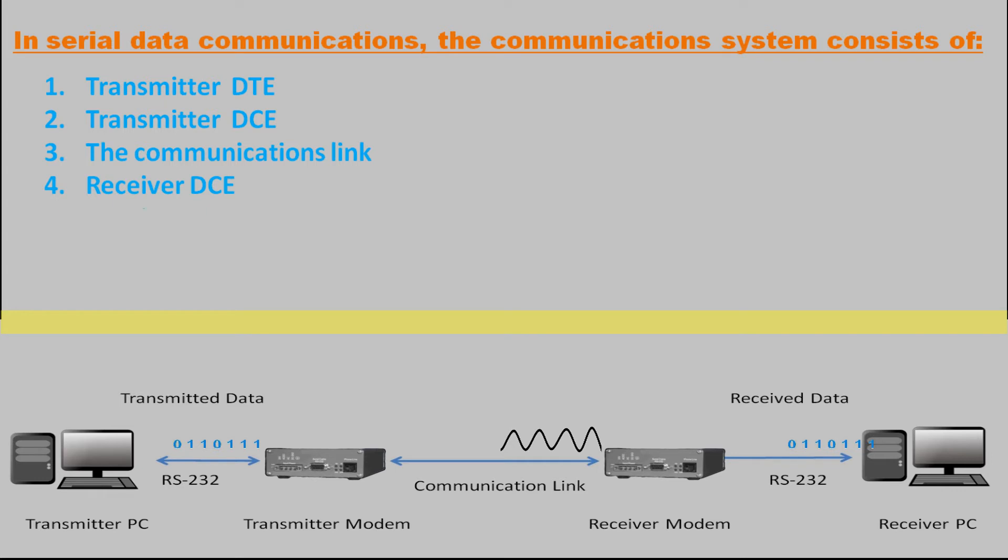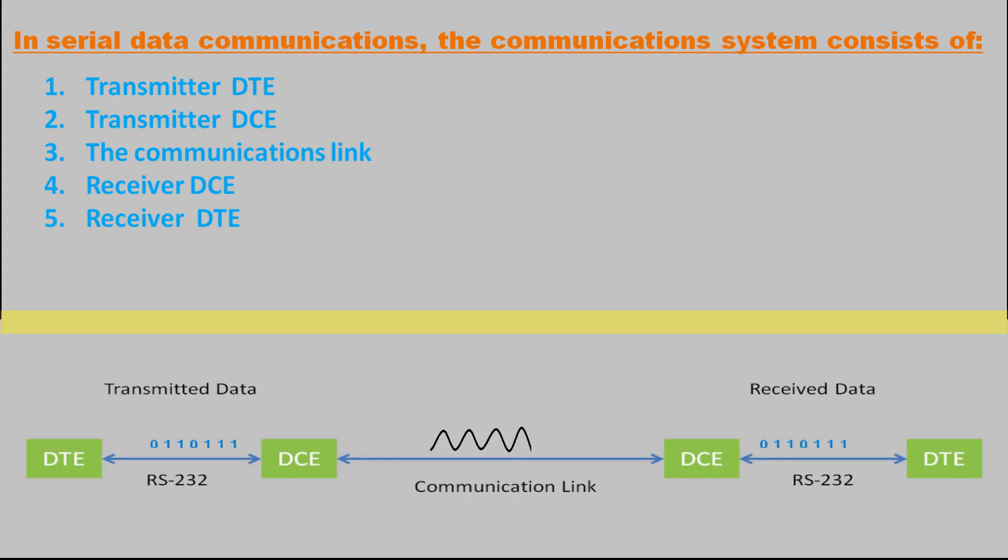Fourth, receiver DCE data communication equipment such as a modem which converts the analog signal back to a form suitable for the receiving terminal. Fifth, receiver DTE data terminal equipment of the receiver side such as a printer which receives the digital pulses for decoding back into a series of characters.